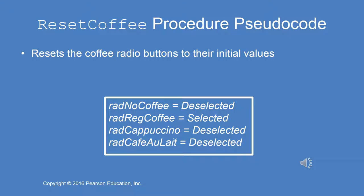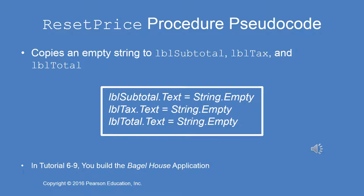Because the coffee selection is chosen using radio buttons, the reset coffee procedure resets the coffee radio buttons to their initial value. The default selected is regular coffee, and all the other radio buttons are deselected. Last but not least, you'll have to code the reset price procedure, and that copies the empty string to label subtotal, label tax, and label total.